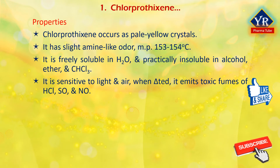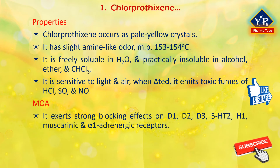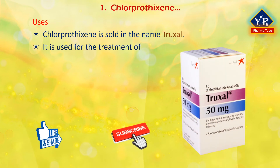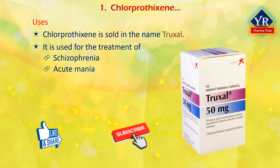It is freely soluble in water and practically insoluble in alcohol, ether, and chloroform. It is sensitive to light and air. It is incompatible with acids, alkalis, phenobarbital, thiopental sodium, and mepazine. It exerts its strong inhibitory effects by blocking the dopamine D1, D2 and D3 receptors, 5-hydroxytryptamine-2, histamine H1, muscarinic, and alpha-1 adrenergic receptors. It is a thioxanthene with effects similar to the phenothiazine antipsychotics. Chlorprothixene is sold under the brand name Truxol, and its principal indications are the treatment of psychotic disorders such as schizophrenia and acute mania occurring as part of bipolar disorder.